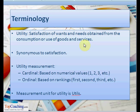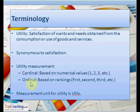In principle, utility measurement can take one of two forms. The first form is the cardinal form, which is based on numerical values such as one, two, three, etc. The second form is the ordinal form, which is based on rankings such as first, second, third, and so on. The unit of measurement for utility is utils.